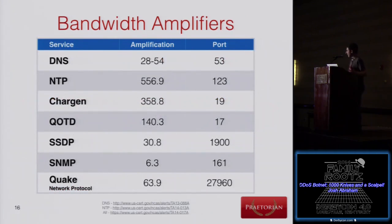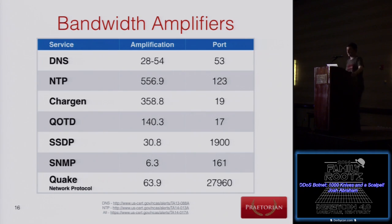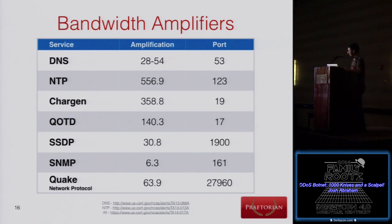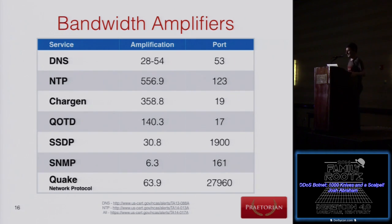One funny entry in the chart is the Quake protocol — old school game server, kind of random but definitely still out there. For NTP scanning: you talk to the exposed service and say 'tell me about systems you've connected to recently,' and it spits back a list of clients. You can use Nmap to do a quick query and get a flood back of all the systems it knows about.